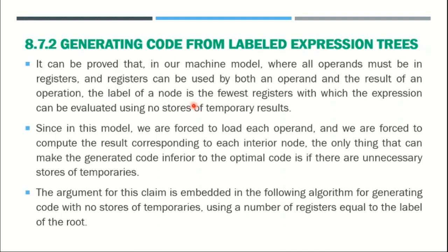Registers can be used for both operands and the result. If there are not enough registers — only a few registers — then we perform the spill operation. Spill means: whenever we require some register but the required number of registers are not available, we copy some register contents into main memory. Those registers can then be used for allocating operands for the current instruction. With this, we can overcome the shortage of registers.